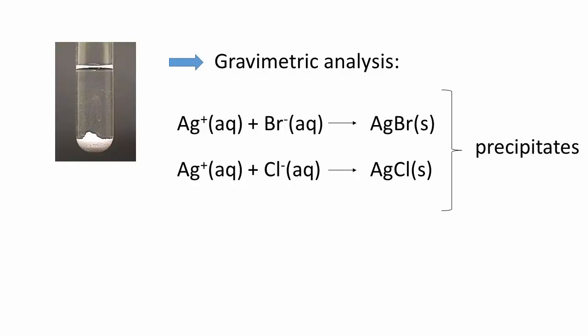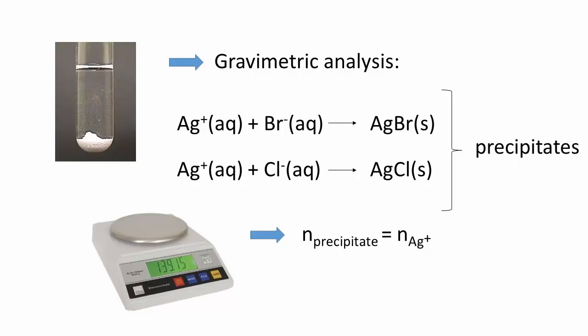Therefore, if we can dry off the precipitate and weigh its mass, we can figure out the number of moles of the precipitate, which in turn gives the number of moles of the silver cation originally in the solution. And if we know this, and the original volume of the solution, we can determine the original silver concentration in the solution.